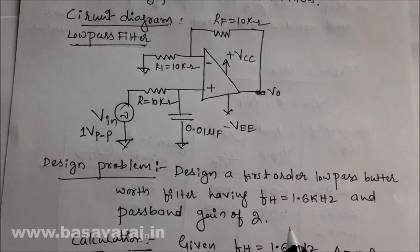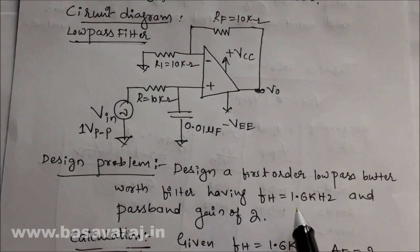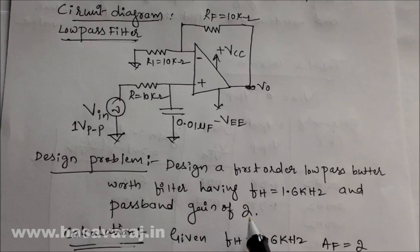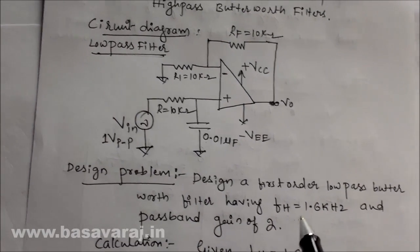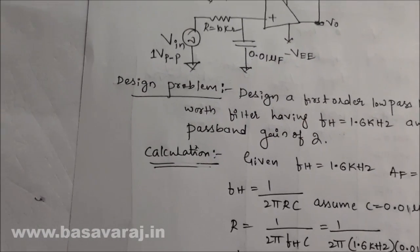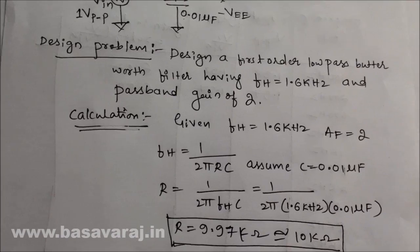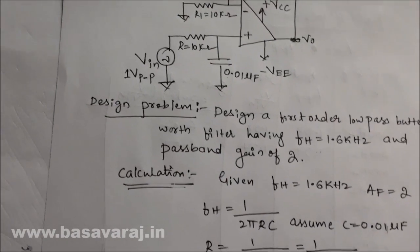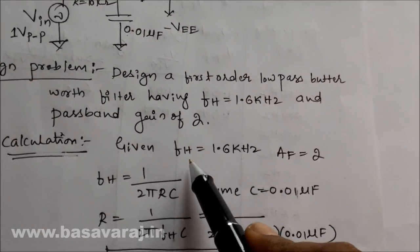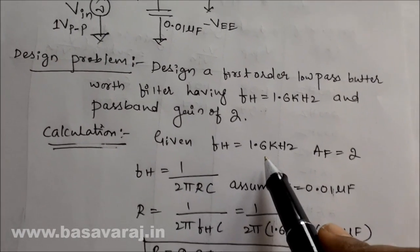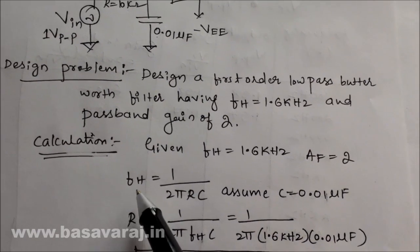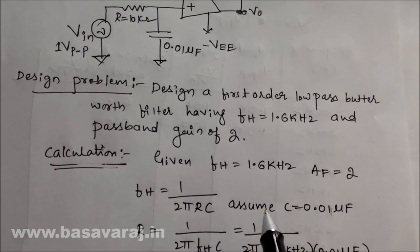Design a first order low pass Butterworth filter having a higher cutoff frequency of 1.6 kilohertz and a passband gain of 2. We have to design a filter such that we get a cutoff frequency or 3 dB frequency at 1.6 kilohertz and a passband gain of 2. Given: higher cutoff frequency FH = 1.6 kHz and passband gain AF = 2. The formula is FH = 1 / (2π RC).